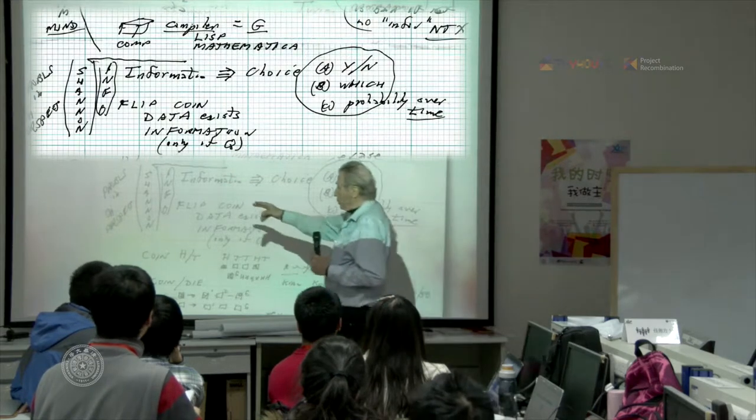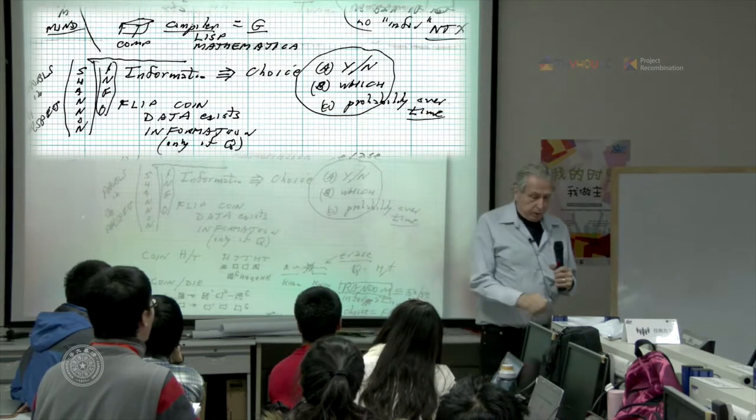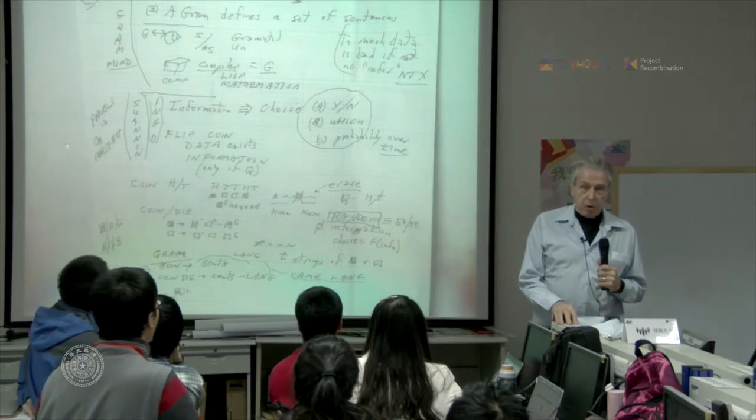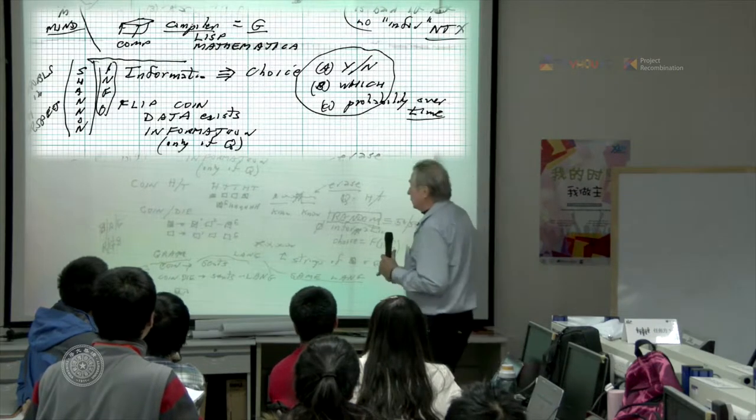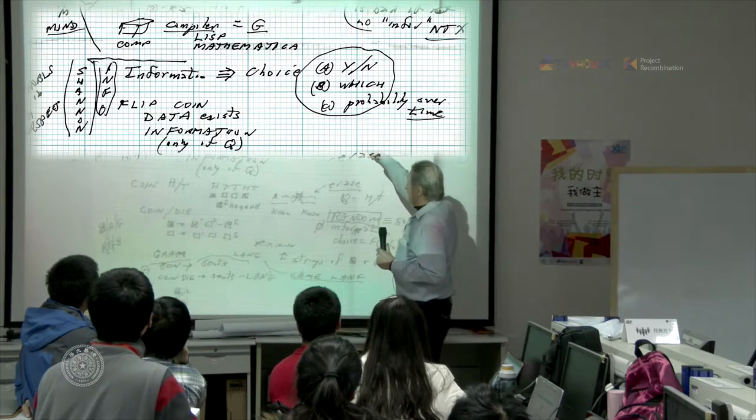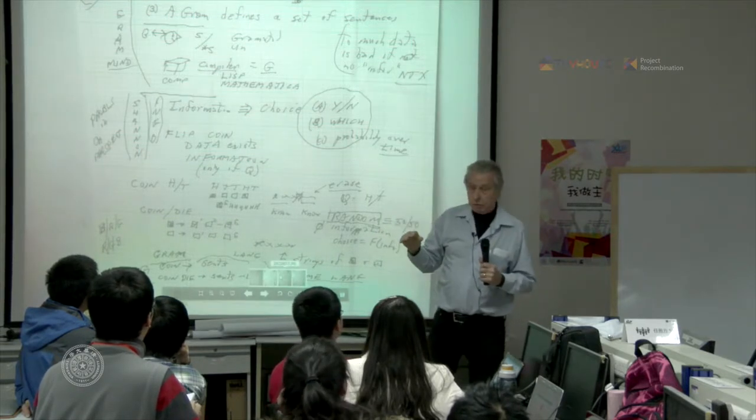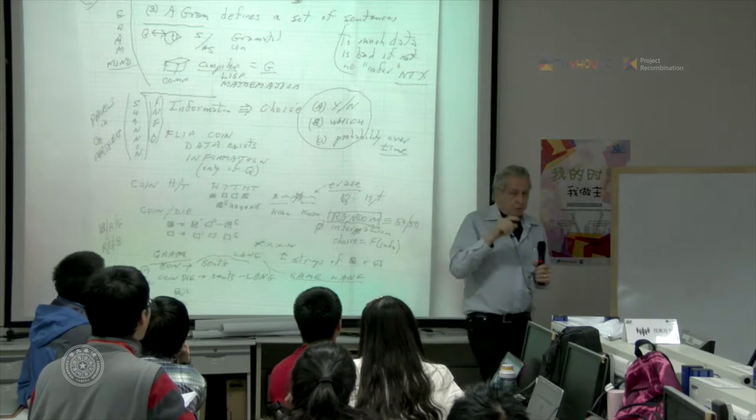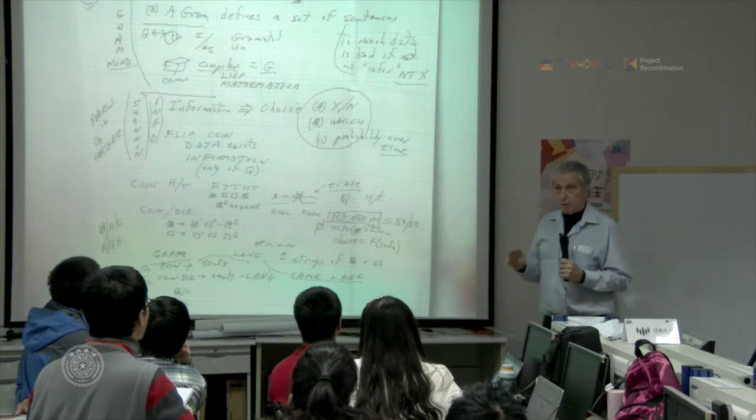Now, a fellow named Claude Shannon invented a thing called information theory. Information theory is not the normal word information. If I said, is there any information in the newspaper, you might say, yes, it's going to rain tomorrow. But that's not information in this sense. Information is a technical term. It only relates to the concept of a choice. You must have to make a choice. And the two main choices are yes and no. So I ask you a question, yes or no. And the information is what makes me decide that it's yes or no.